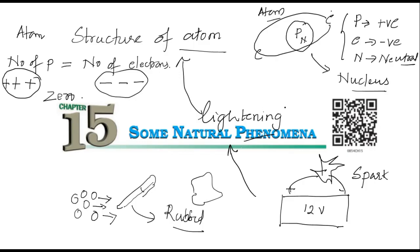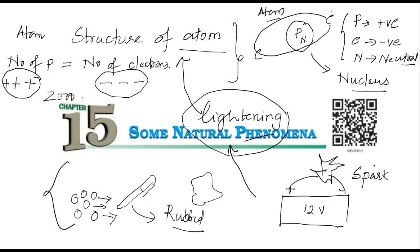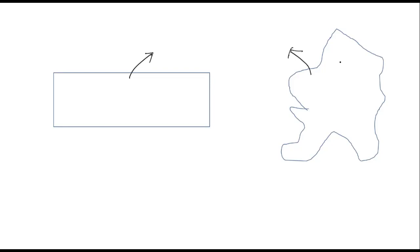So far we have understood this much. This information is required to understand the process of lightning. Now let us take some objects. Let's take a kind of a rod — think of this as a plastic rod. And this is another material — you can take it as a cloth. Both are neutral. And can you tell me why they are neutral? Going back to the structure of atom: the number of protons will be equal to the number of electrons — so many positive charges, so many negative charges.